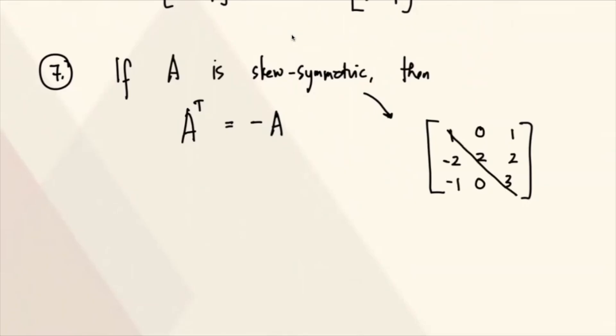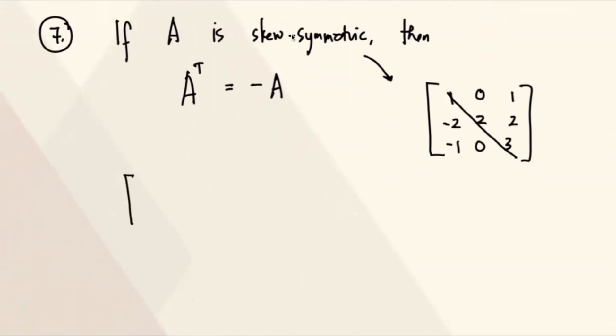Okay, property number 7. If A is skew symmetric, then A transpose is negative A. Anong ibig sabihin ng skew symmetric? Ibig sabihin lang is, para siyang symmetric, pero magkaiba ang sign ng taas at baba. So example, this is diagonal. So 0, 1, 2. So pwede ditong maging 0, negative 1, negative 2. So kung titingnan mo, magkakapareho, magkaiba nga lang ang sign.